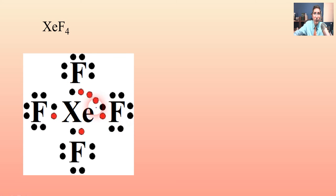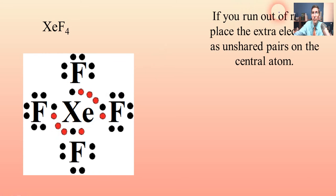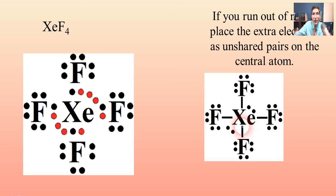So what do we do? If you run out of room, place those extra electrons as unshared pairs on the central atom. Electrons five, six, seven, and eight go right there on the xenon. So when we clean this up, we have four single bonds attached to the xenon with two unshared pairs on it as well.